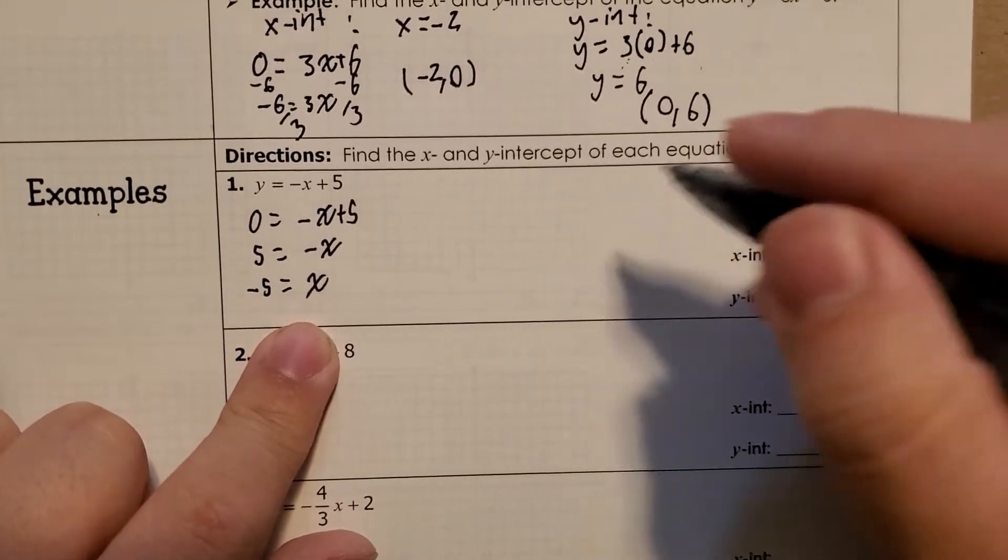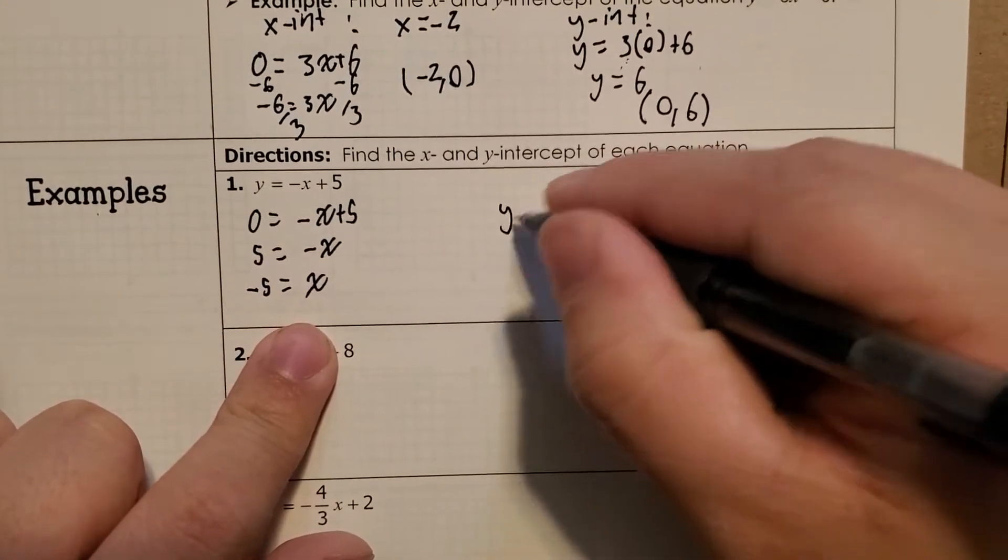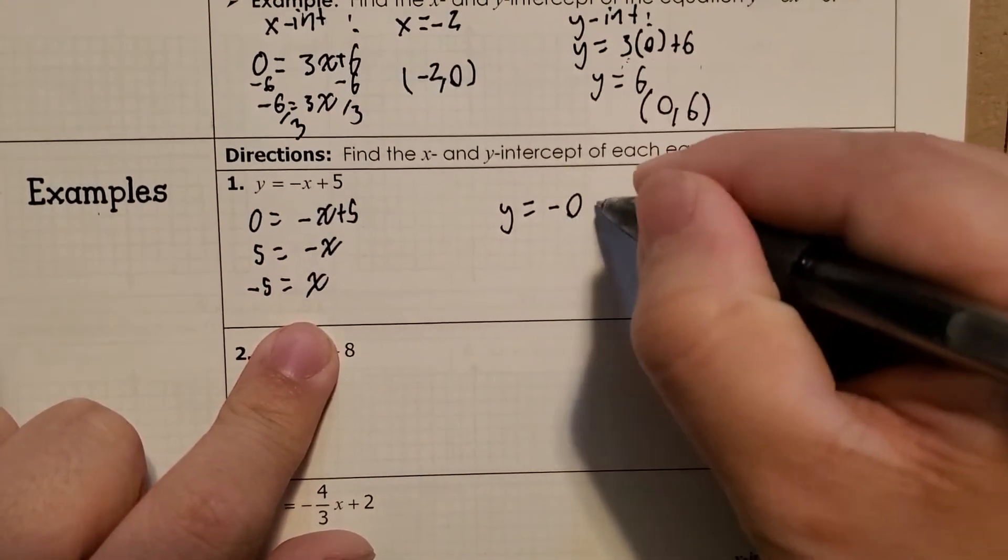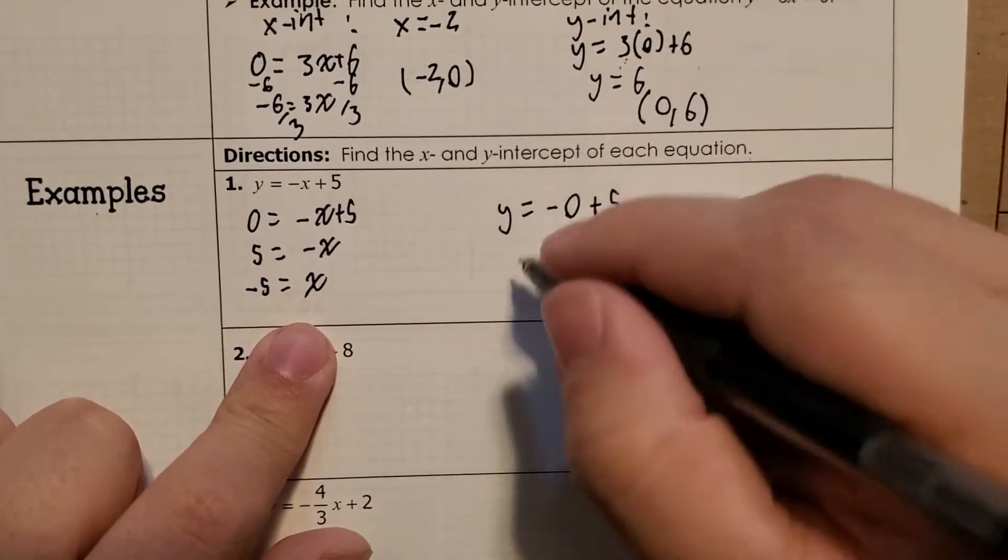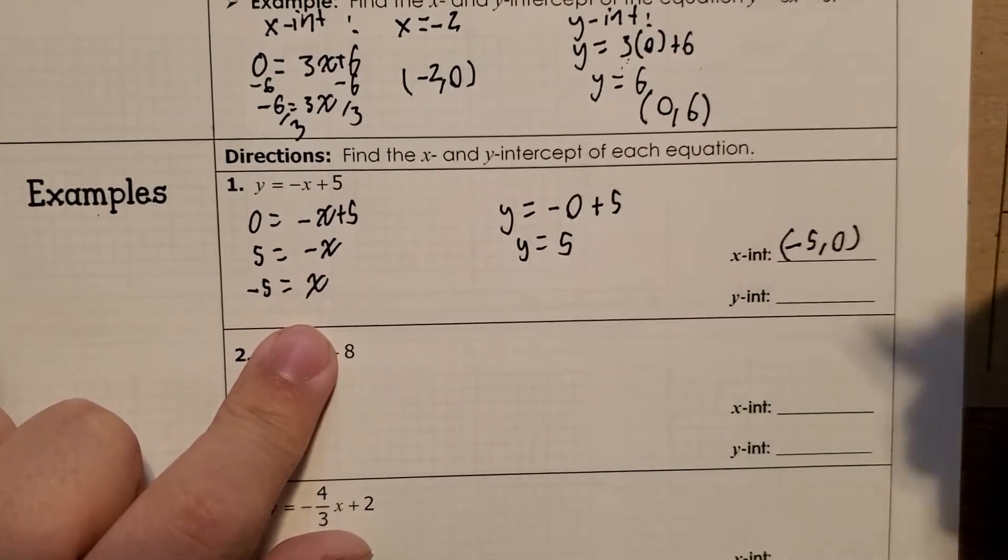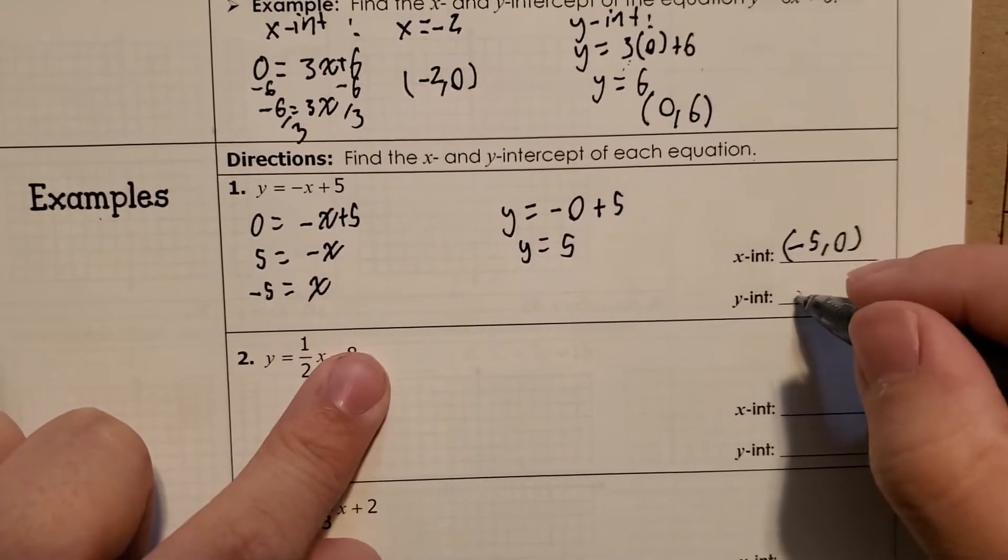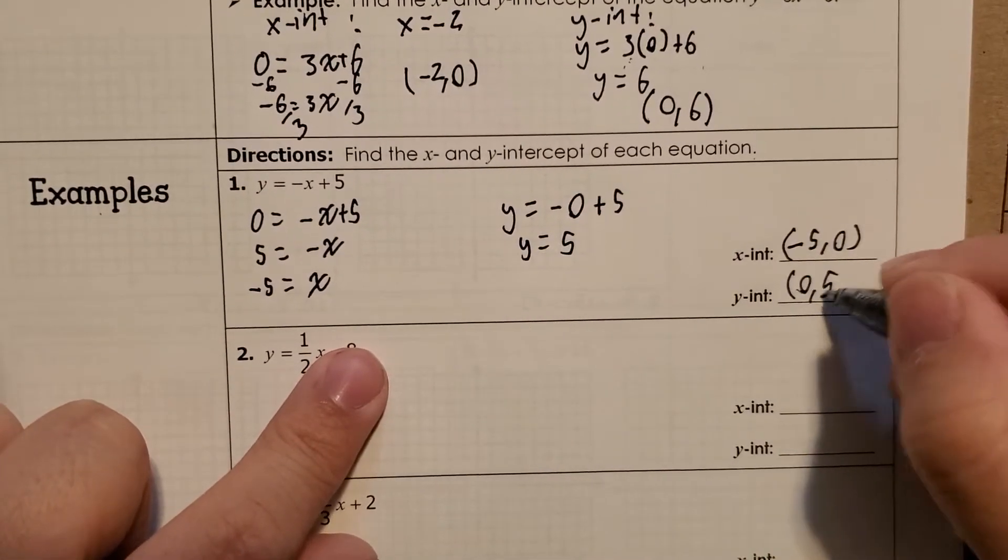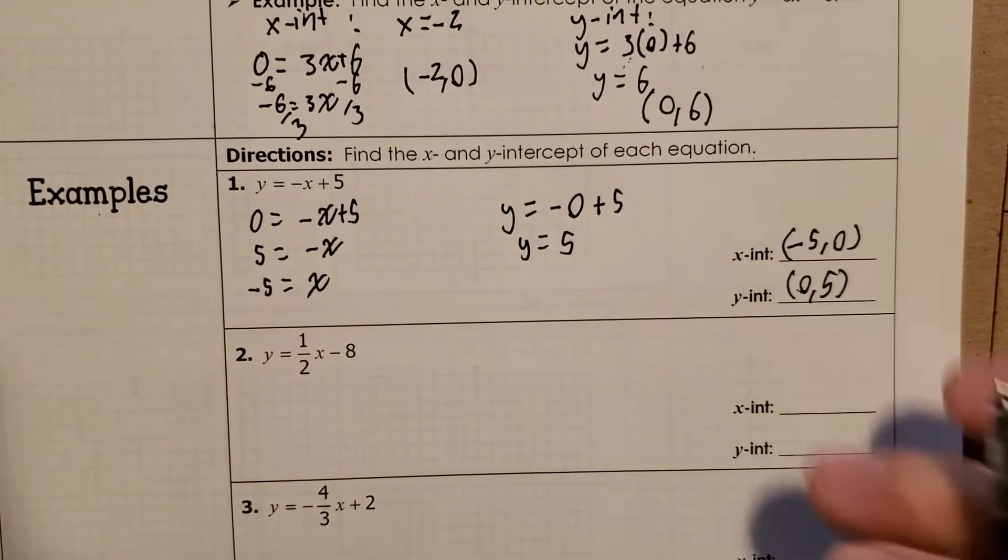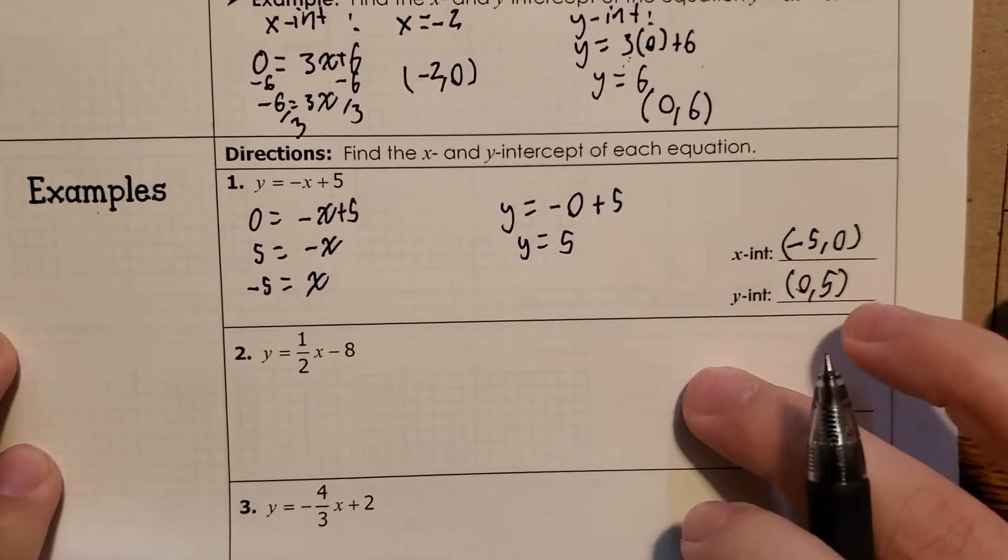And then our other one, our y-intercept, is going to be at negative 0 is just 0, so that's pretty easy. y equals 5. So our point is at 0, 5. So that's how to do them algebraically.